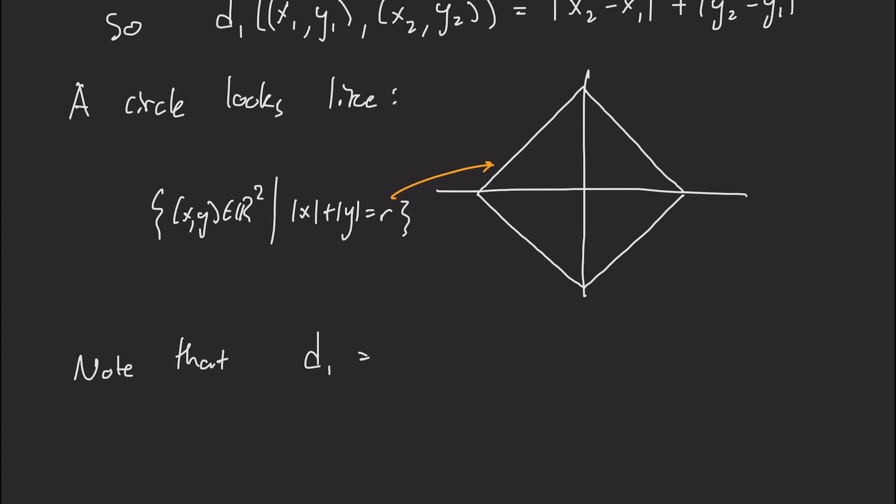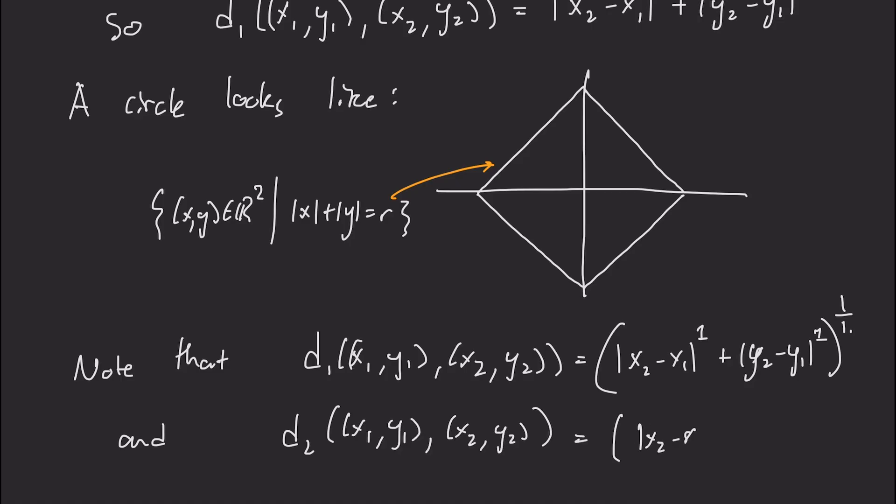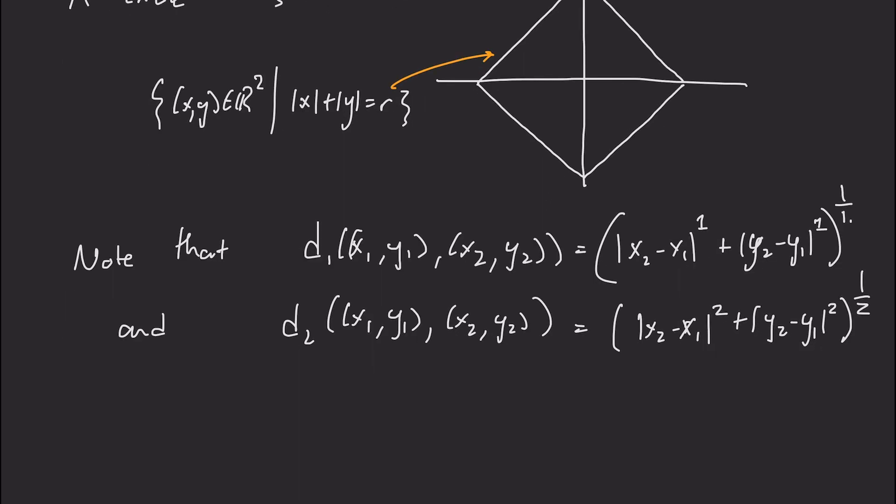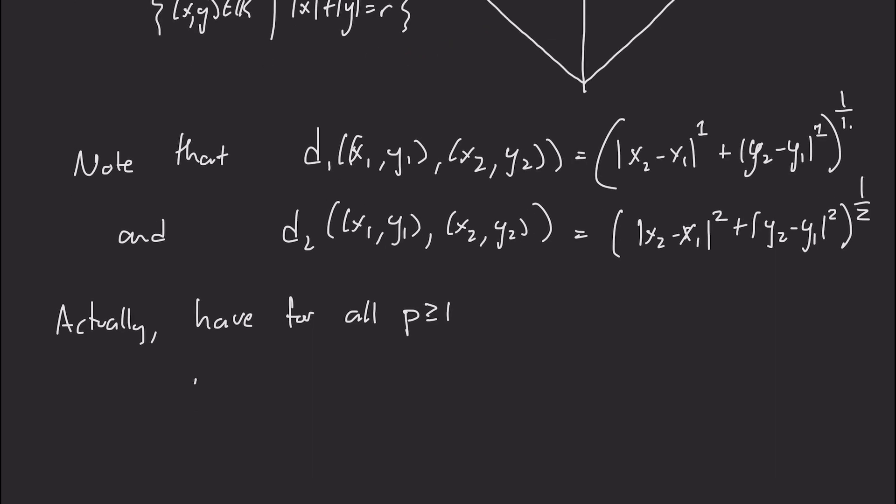Okay, I want to make a slight generalization here. So why am I calling it d1 and d2? Well, notice that d1 has this pattern. I can raise those to the exponent 1. And d2 has this pattern. So the square root is actually just the power of 1 over 2. And I have these squares inside. So maybe we can change that for any p.